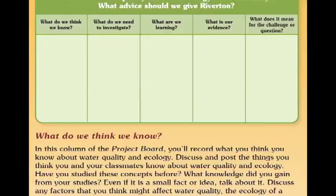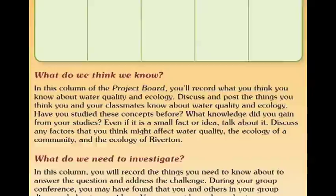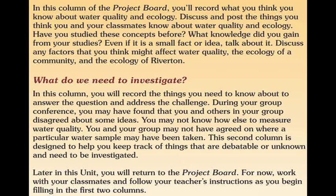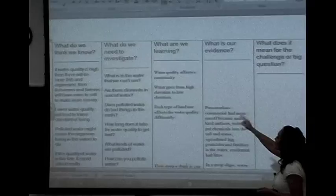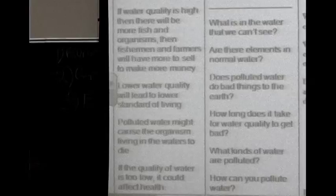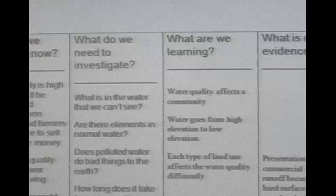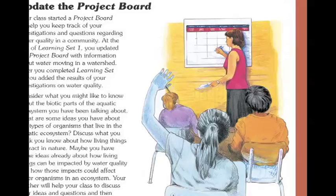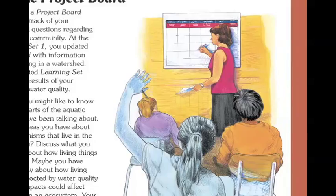Students will disagree about some of the items in the first column. These are indicators of questions that need to go into the second column. As they move through the unit, they will revise the project board adding more specific questions. In this second column, it is important that the teacher guides the students to anticipate the questions they will need to answer in the upcoming learning set. Using the project board in this way will help students feel they are moving through the unit at their own pace and on their own terms, investigating science content they have identified as important. At this point, do not expect students to be experts at the project board. They will be using it over the entire unit and will understand its purpose better as they gain more experience.